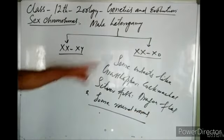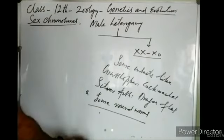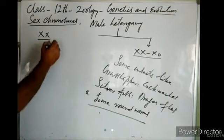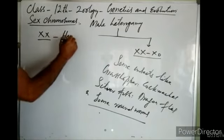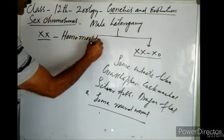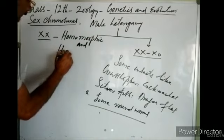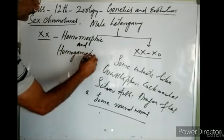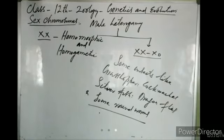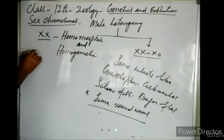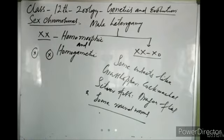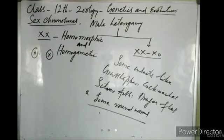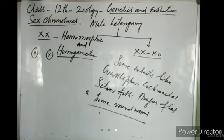In the XX/X0 condition, the female has sex chromosomes XX. It is homomorphic for sex chromosomes and homogametic. The two sex chromosomes of the female are similar in shape and size — that is homomorphic. When meiosis occurs, the female produces ova, and each ovum has sex chromosome X, so all ova are alike in their genetic makeup.